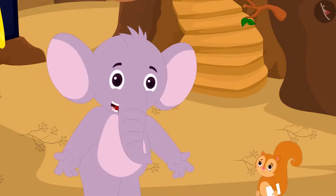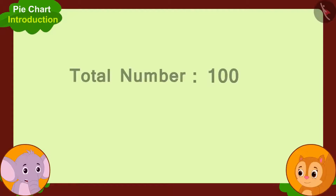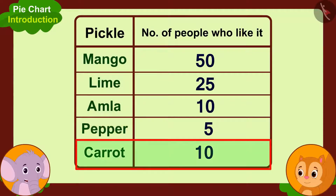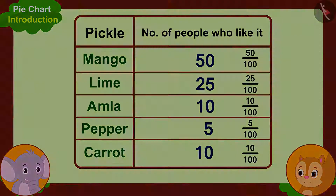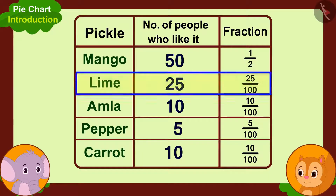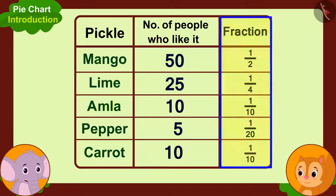'Let me teach you how to make it. We have got information of a hundred people in total. To make a pie chart, we will first write the number of people who like each pickle as a fraction of hundred. Like, 50 people like mango pickle, so we take the number as 50, or half part of hundred. In the same way, we will write different pickles liked by people as fractions of hundred.'